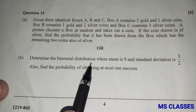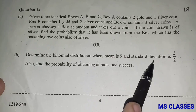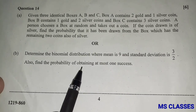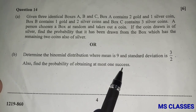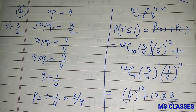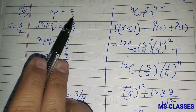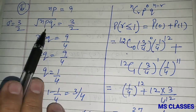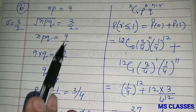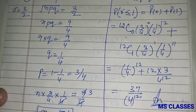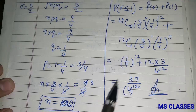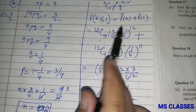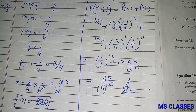Determine the binomial distribution where mean = 9 and standard deviation = 3/2; also find the probability of at most one success. Here np = 9 and σ = 3/2, so npq = 9/4. Solving these gives n = 12 and p, q values. Using the binomial probability formula, P(X ≤ 1) is computed accordingly.